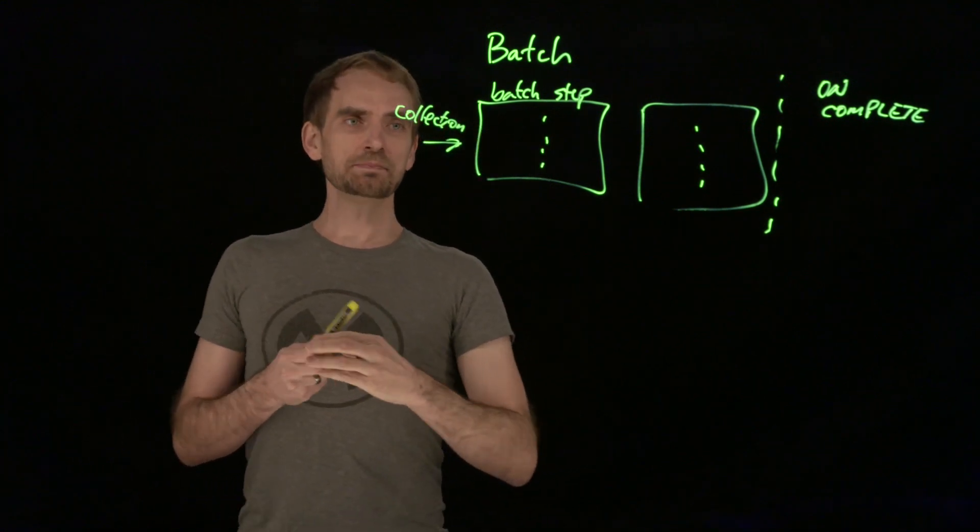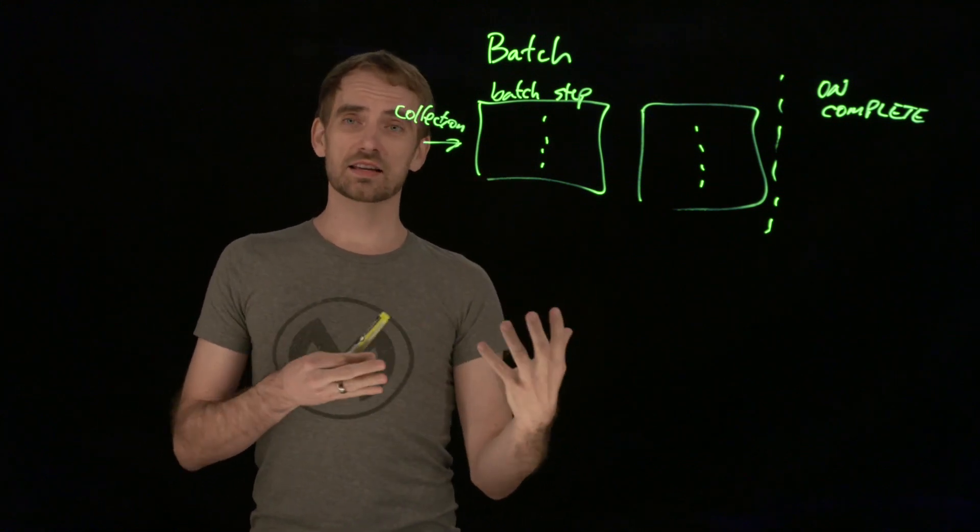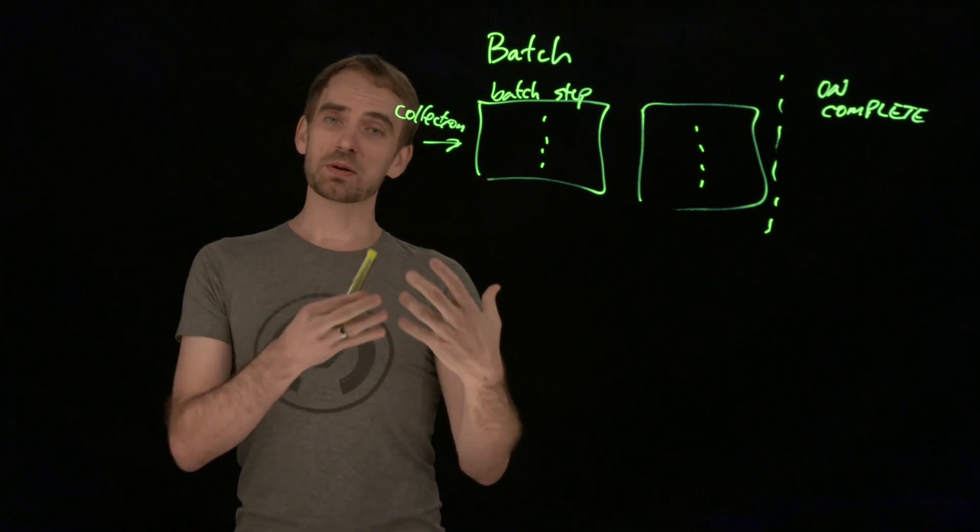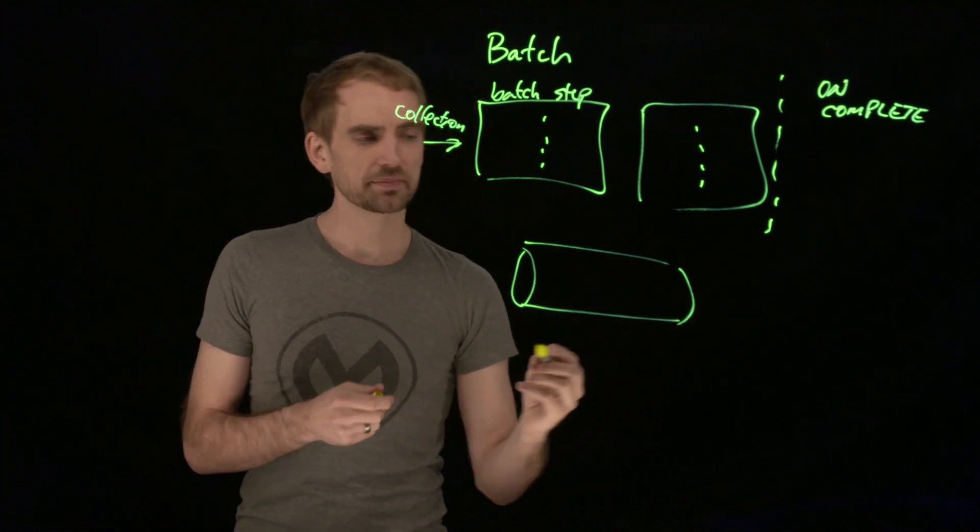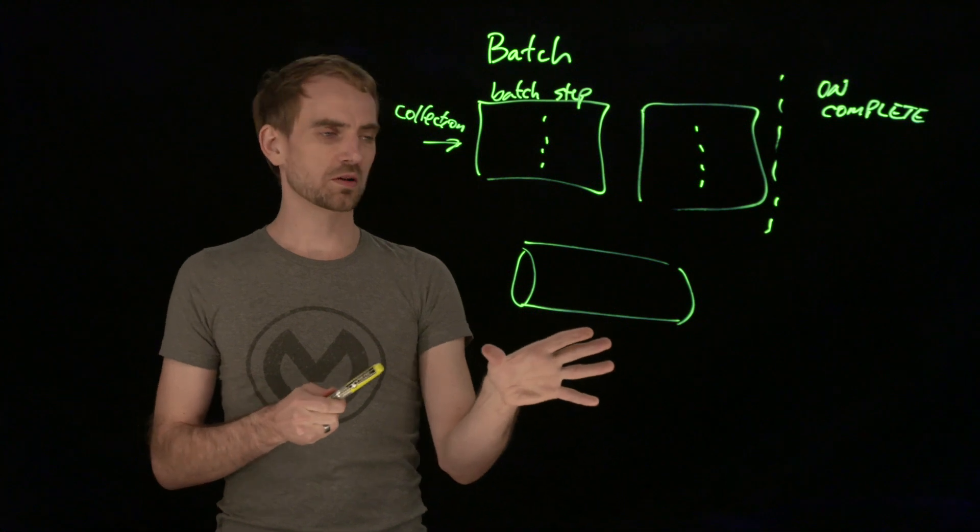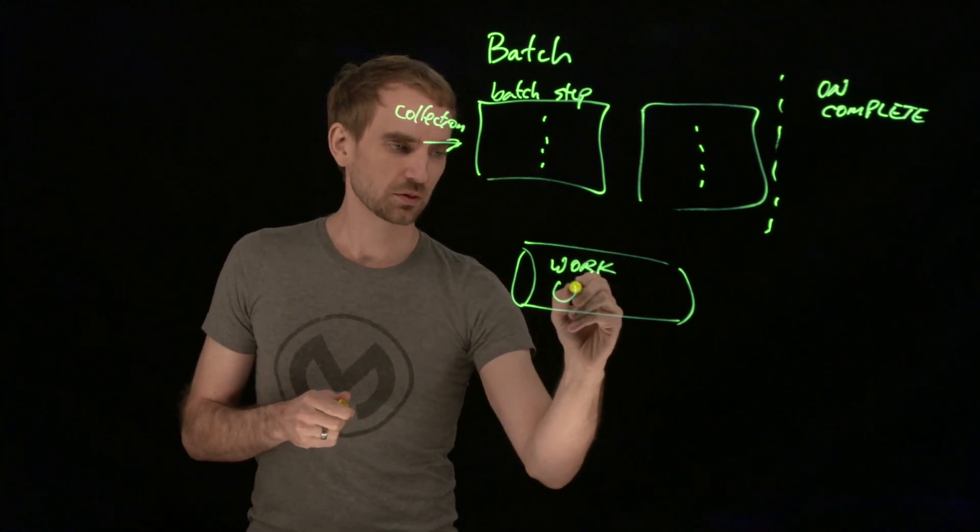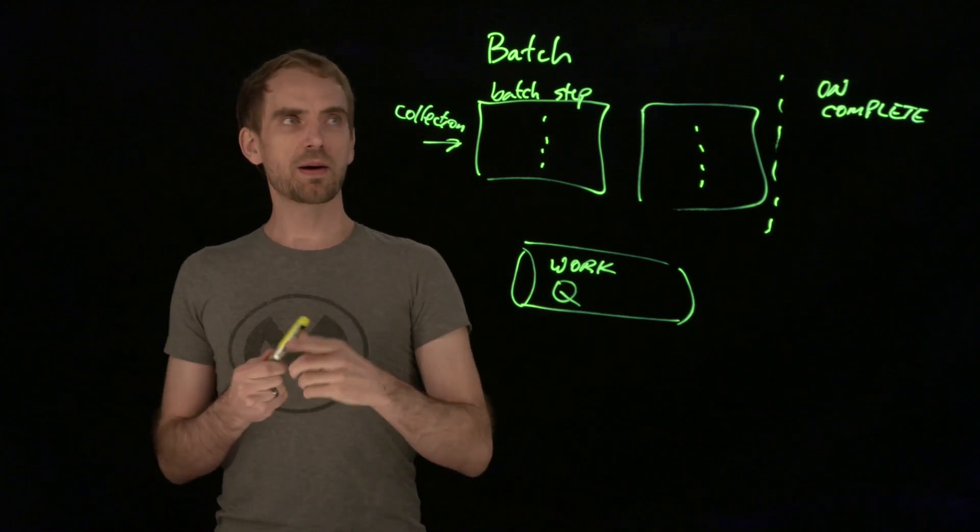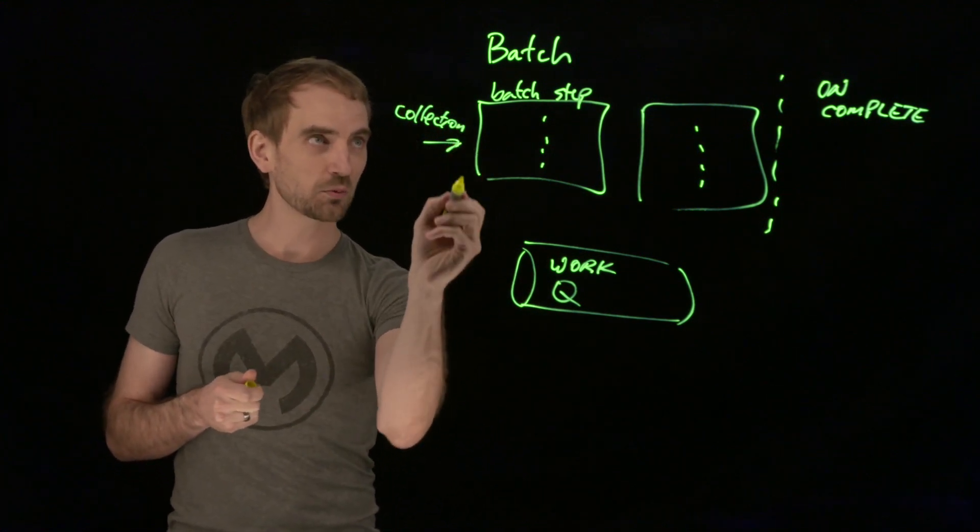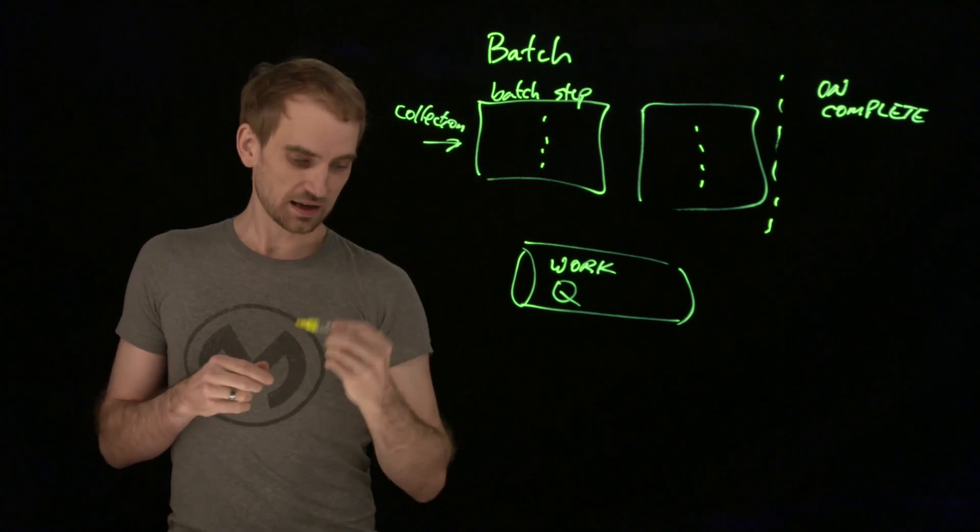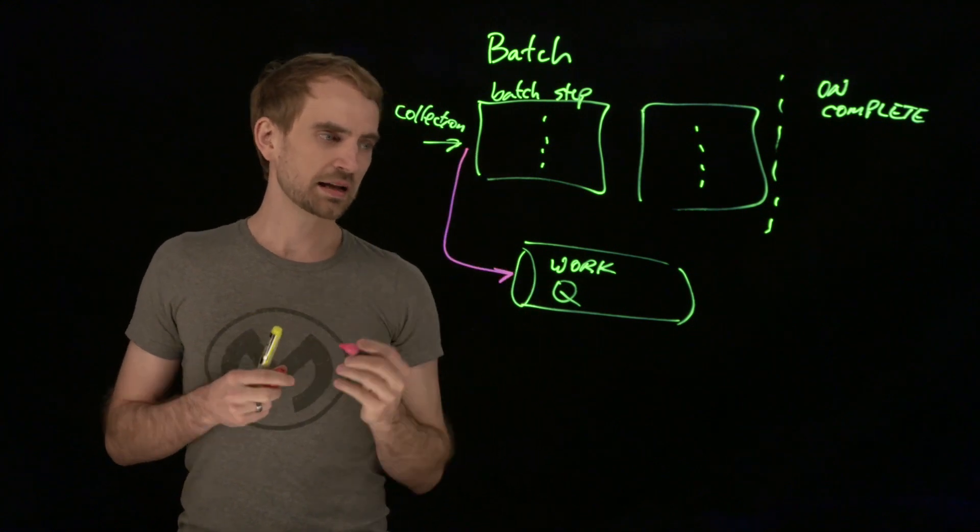Now with that collection, there are some parameters that batch has to control the way that it does its job. It has a big work queue that it's trying to manage. This is a conceptual model of how it works. This is the work items, or the work queue. And batch will take that collection and feed it into the work queue. So at the point where you hit your batch, it does a load into the work queue.